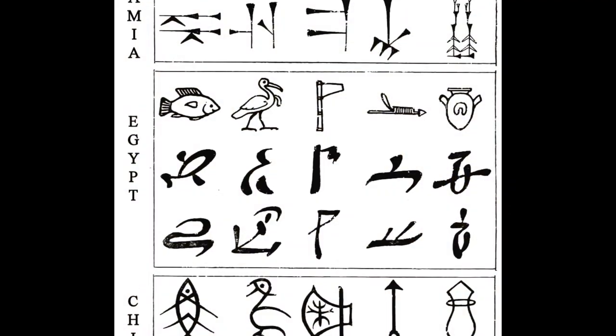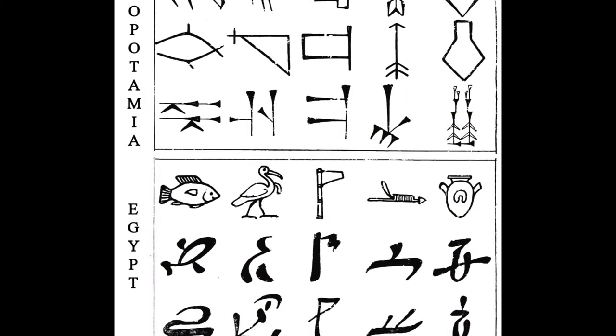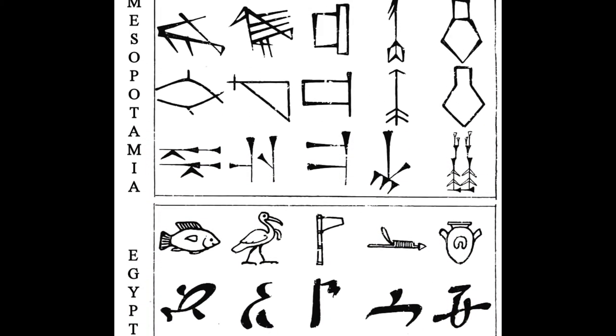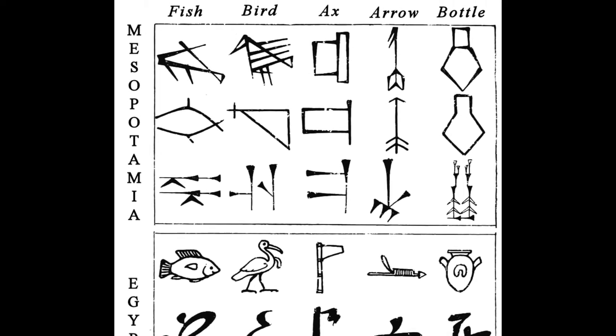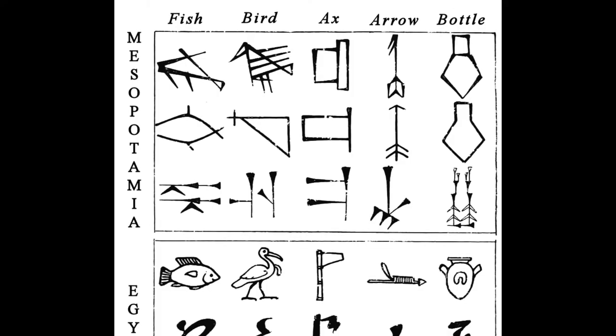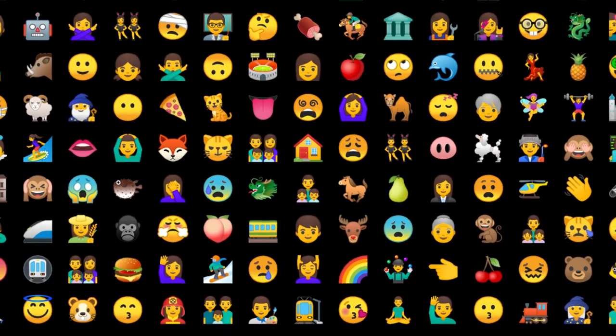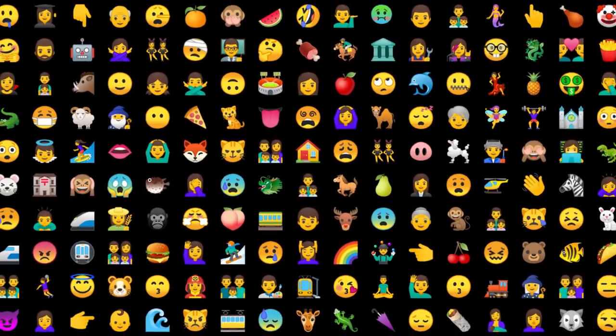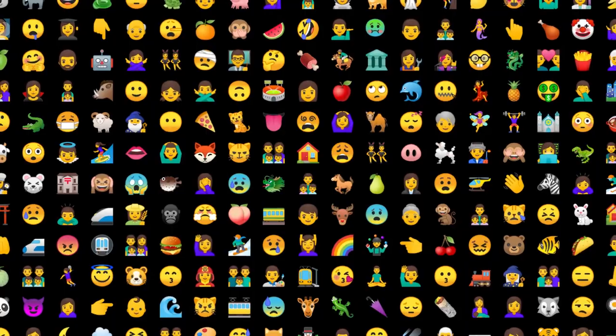But for a minute, let's step back — way back in time. First we have the development of writing. Early forms of pictographic communication, which were basically little drawings, had been used for tens of thousands of years by human beings. Draw a picture of a flower, it means a flower. Yet you can imagine how limited this form of communication would be — how do you communicate complex ideas through simple pictures? It would be kind of like speaking only in emojis.